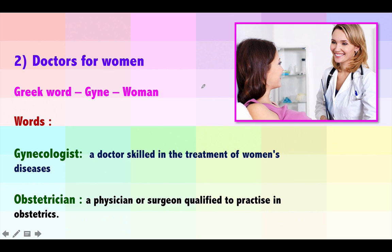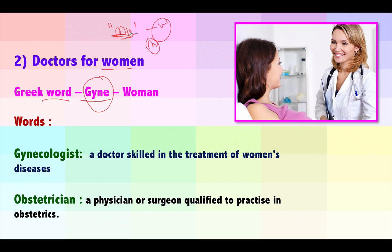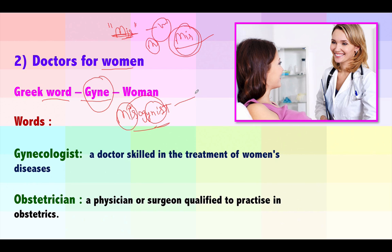Now let's talk about doctors for women. The word for women in Greek is 'gyne.' The English prefix 'mis-' denotes something negative, like misunderstanding or mismanagement. So a misogynist is a person who hates women, who doesn't respect women and tries to pull them down in every possible way — tries to suppress and oppress women. That kind of person is called a misogynist.